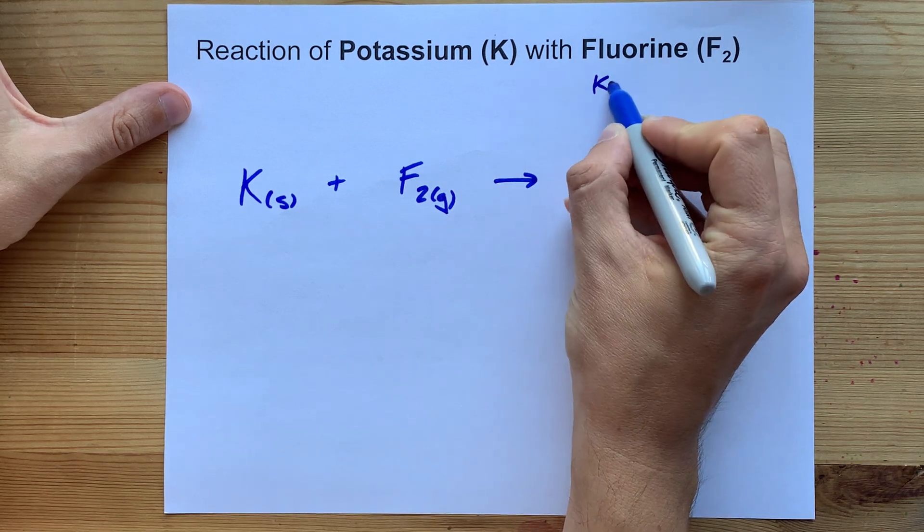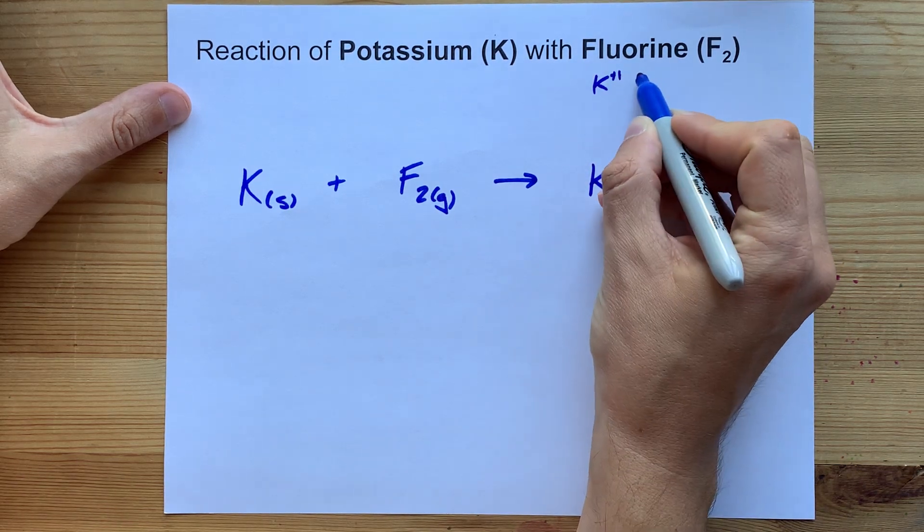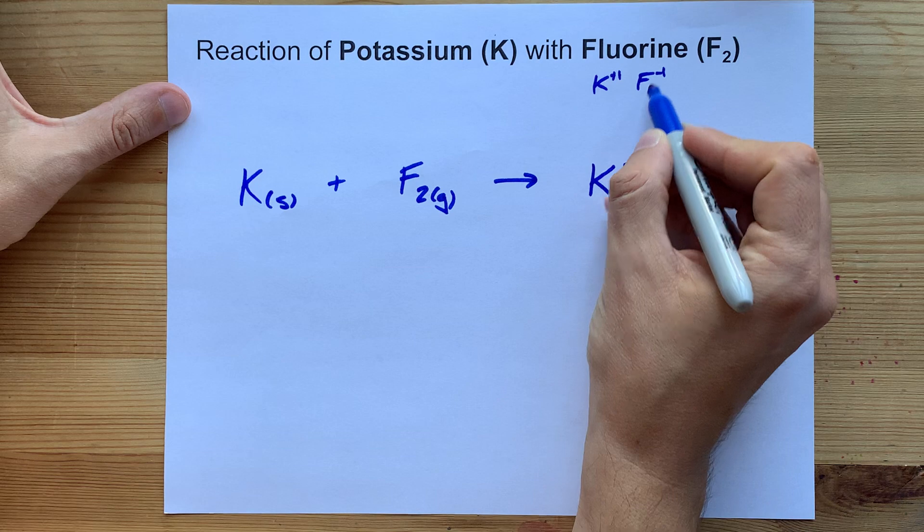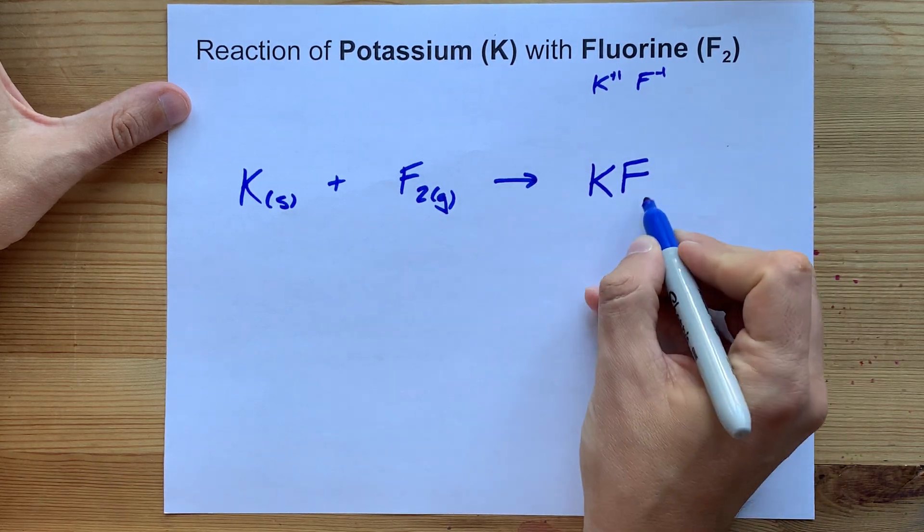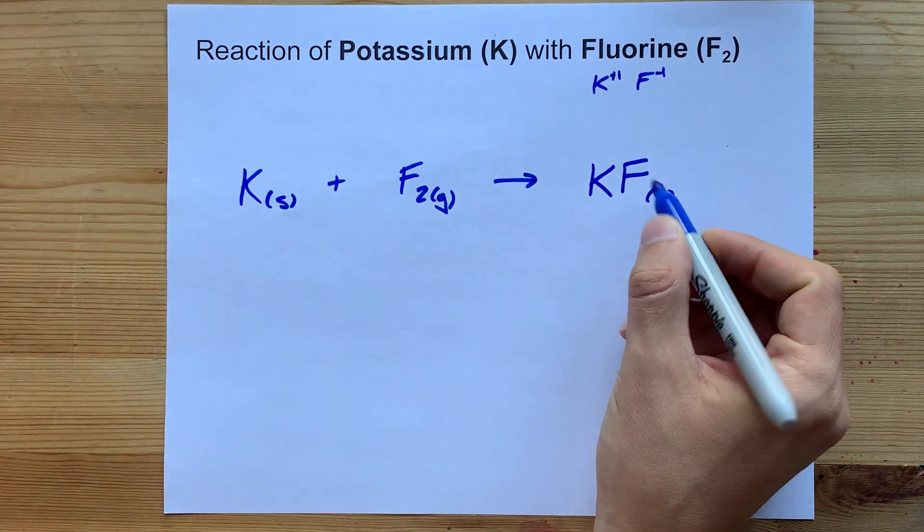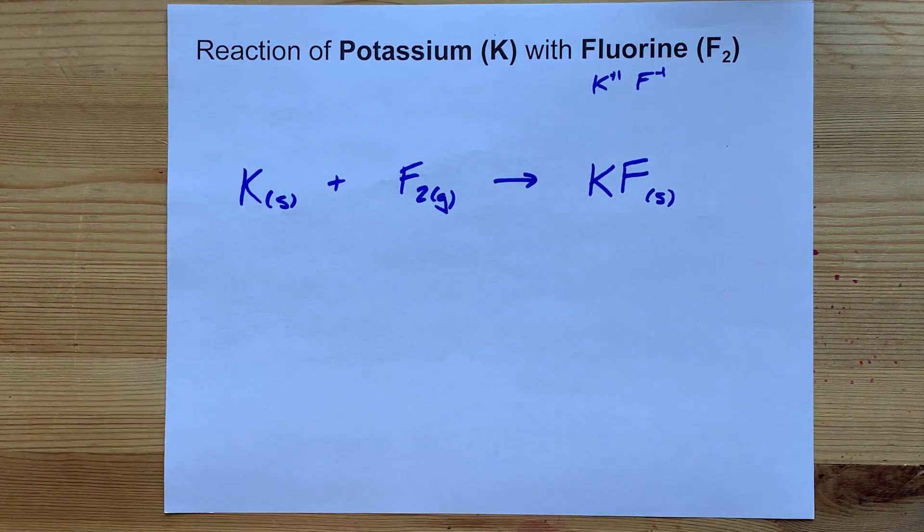Potassium likes to have a charge of plus one, fluorine likes to have a charge of minus one. When you crisscross those charges you get KF. It is generally going to be a solid, unless you have water around, in which case it'll dissolve to become aqueous.